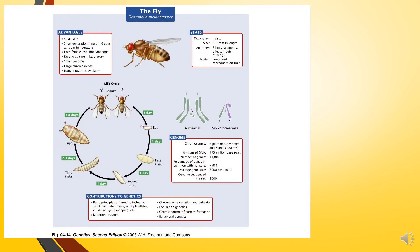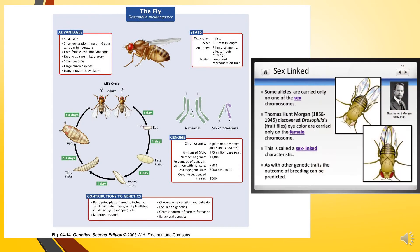Next we will discuss linkage and recombination. This was worked on by Morgan, a zoologist who was awarded the Nobel Prize in the year 1933 in the field of medicine for his contribution in genetics. He worked on Drosophila, a fruit fly. Thomas Hunt Morgan discovered that Drosophila's eye color is carried only on the female chromosome — that is, the X chromosome — and this is called a sex-linked characteristic.